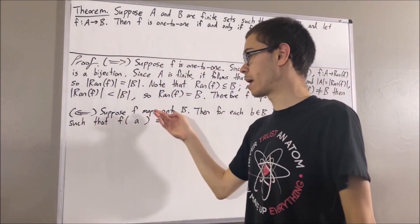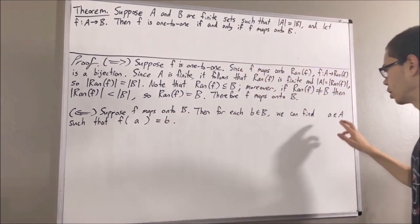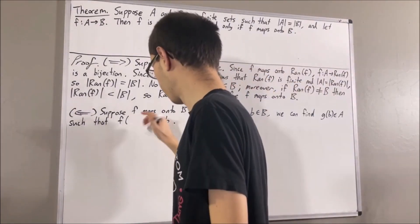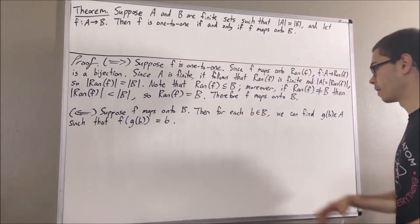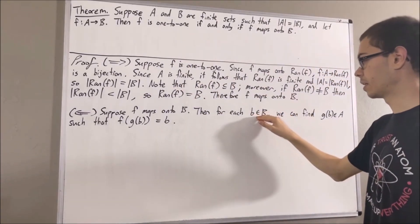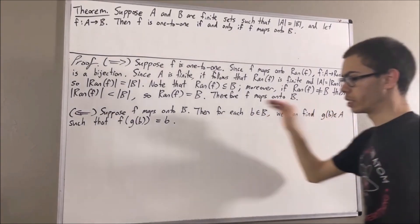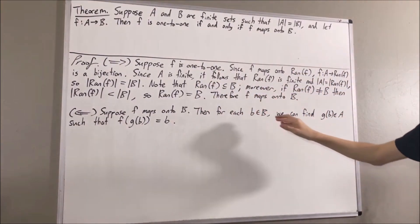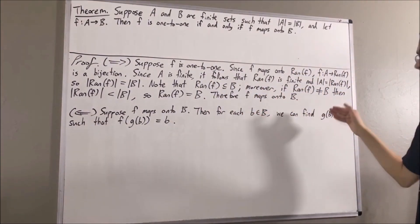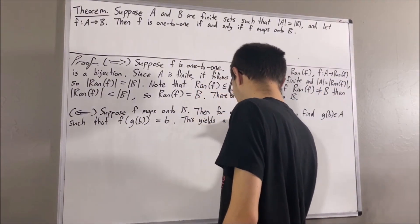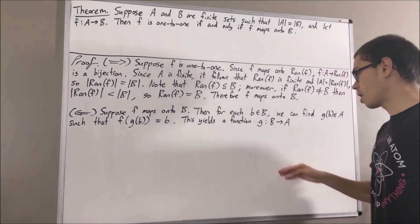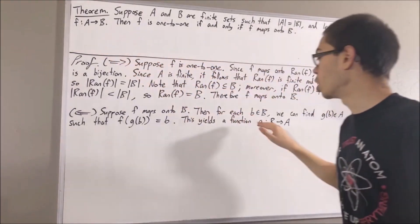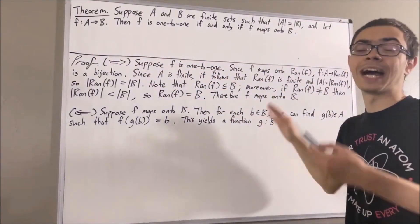So this is what it means for F to map onto B. Now I'm going to label that element a by G of b. What I'm essentially saying is we can take each element in B and map it to an element in A which has this property. So this yields a function from B to A, which we're going to call G. And it turns out G has the property that the composition F composed with G is equal to the identity map on B.